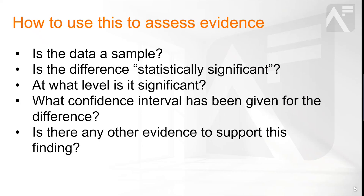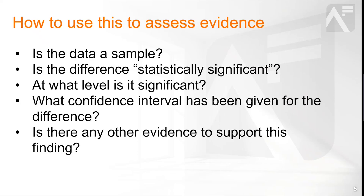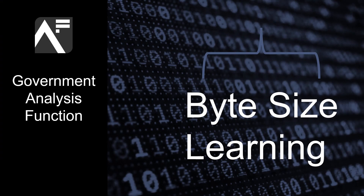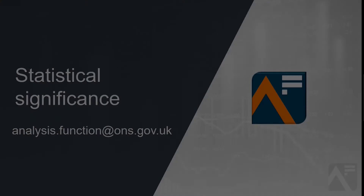When working with samples, it's impossible to eliminate all uncertainty. This is why analysts generally cross-reference between more than one study to make their findings truly robust. We hope you found this useful. If you want to find out more, take a look at the Analysis Function YouTube channel or on gov.uk, or sign up to the Analysis Function newsletter by emailing us at analysis.function@ons.gov.uk.